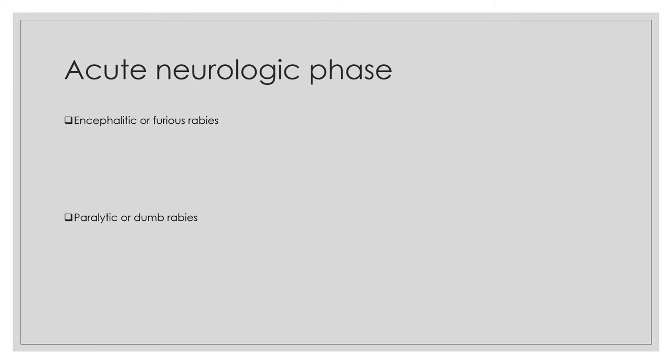In encephalitic or furious rabies, which lasts two to seven days, the earliest symptoms are hyperexcitability — anxiety, agitation, hyperactivity, bizarre behavior, and hallucination. This is followed by a lucid interval of complete lucidity. After the lucid interval, the patient develops autonomic dysfunction with hydrophobia and aerophobia. The autonomic dysfunction includes increased lacrimation, salivation (leading to foaming at the mouth), and increased perspiration. Hydrophobia and aerophobia are caused by involuntary painful spasm of the respiratory, laryngeal, and pharyngeal muscles, likely due to dysfunction of infected brainstem neurons.